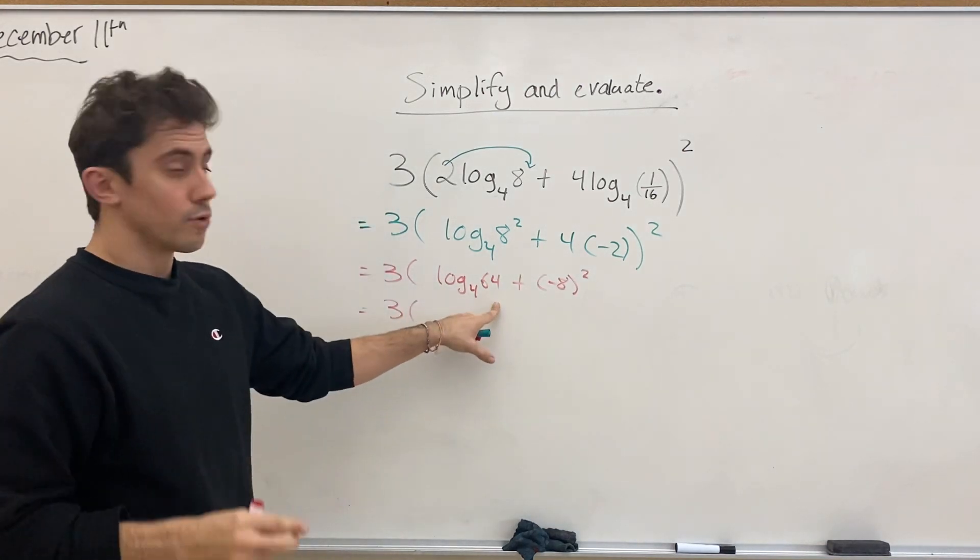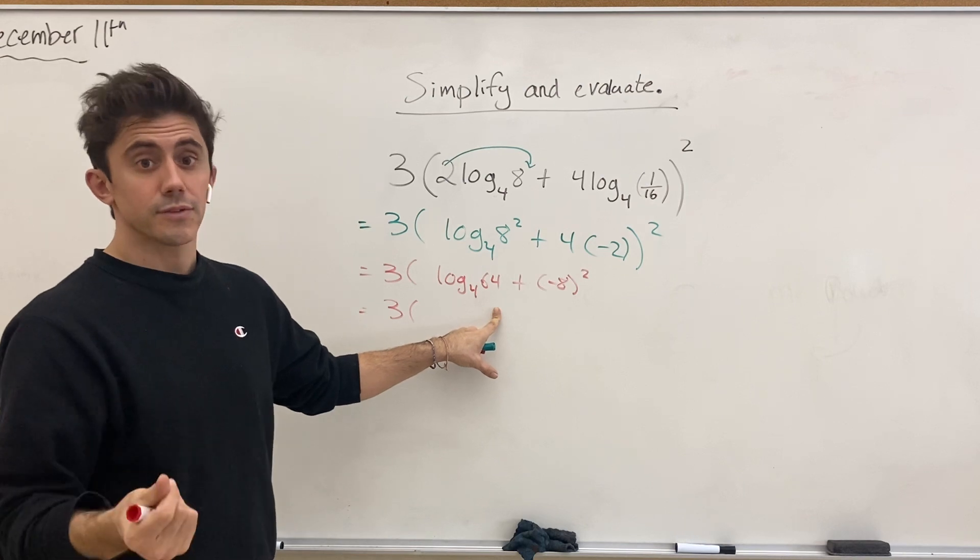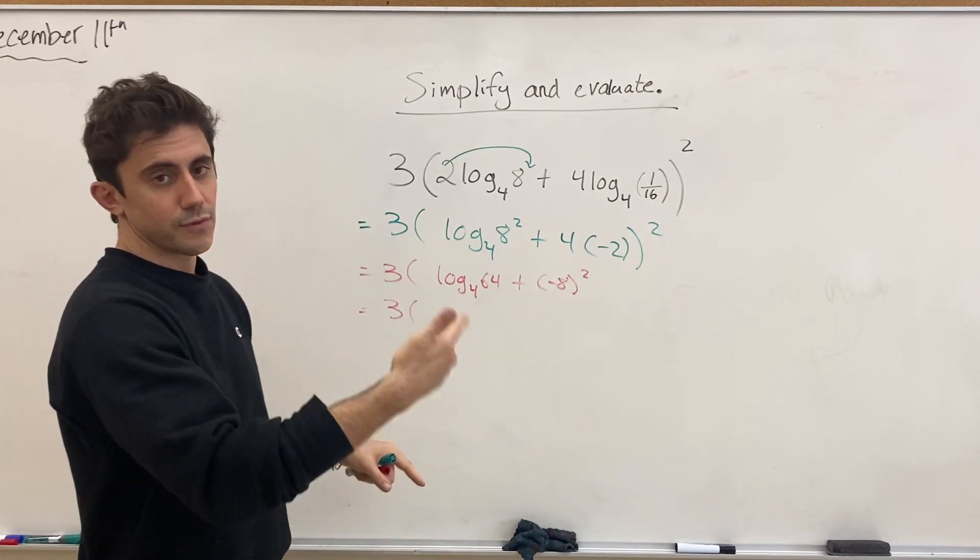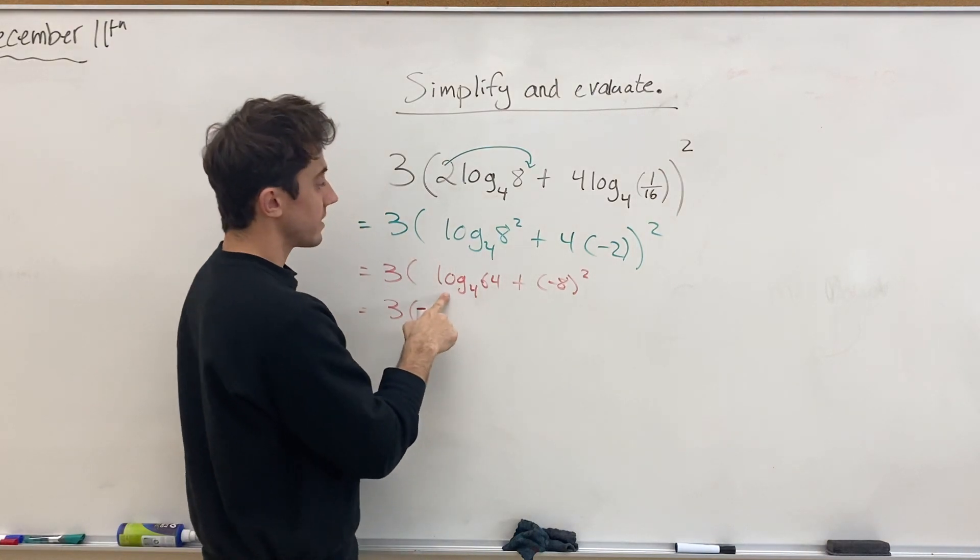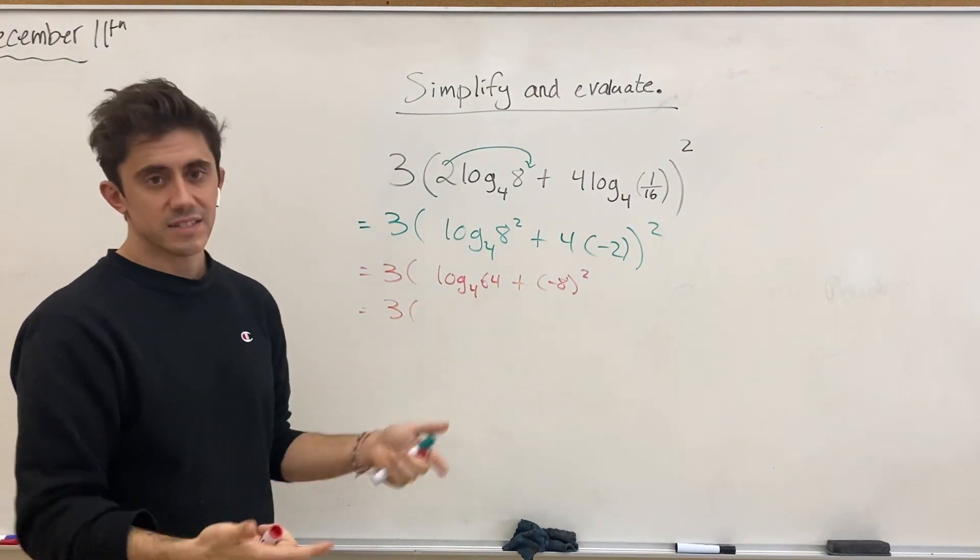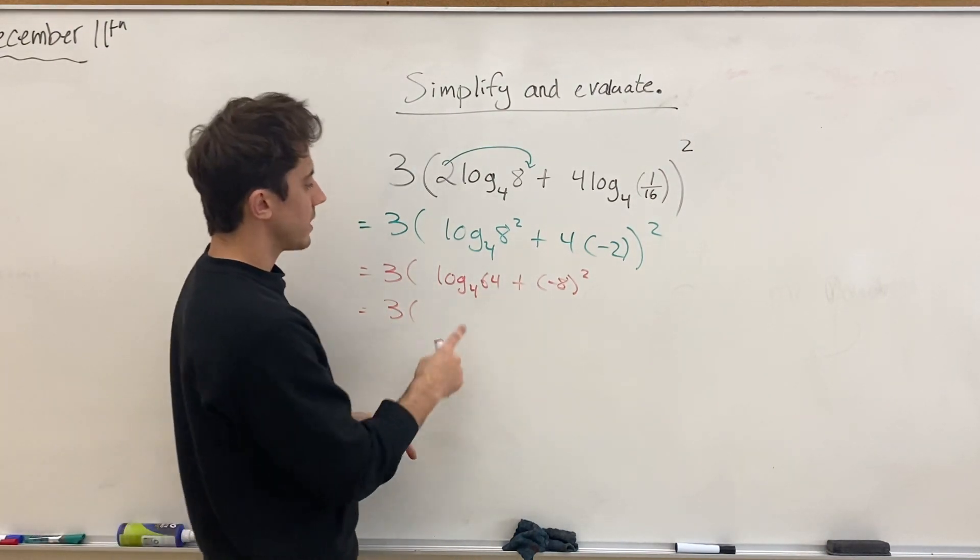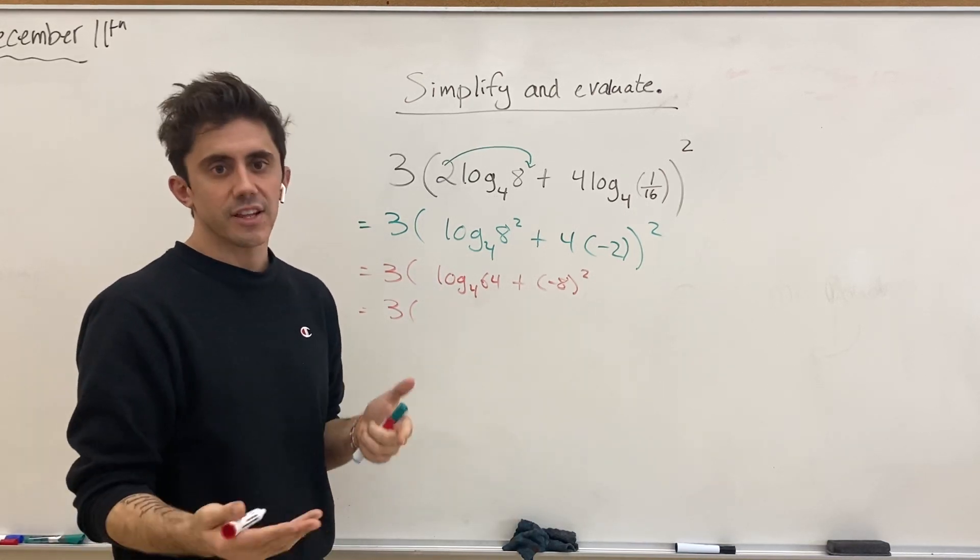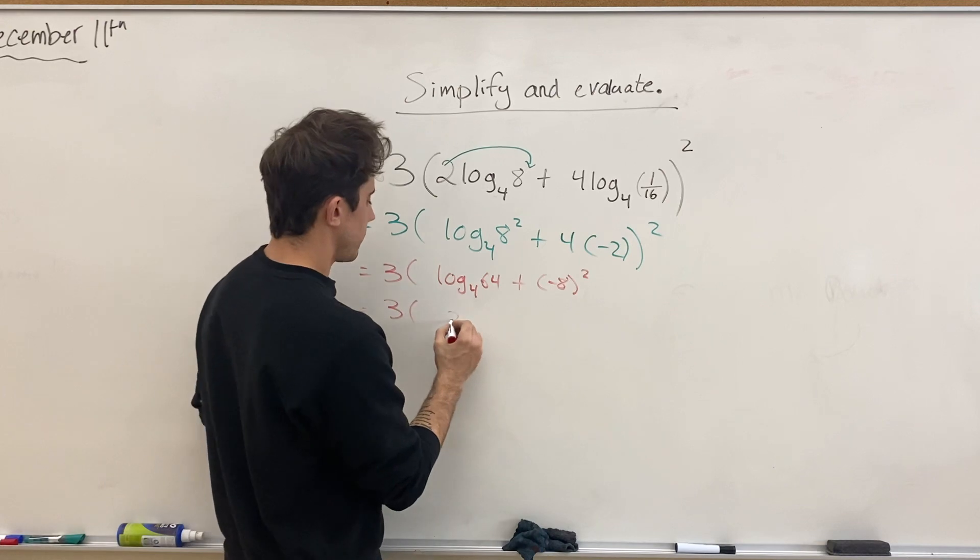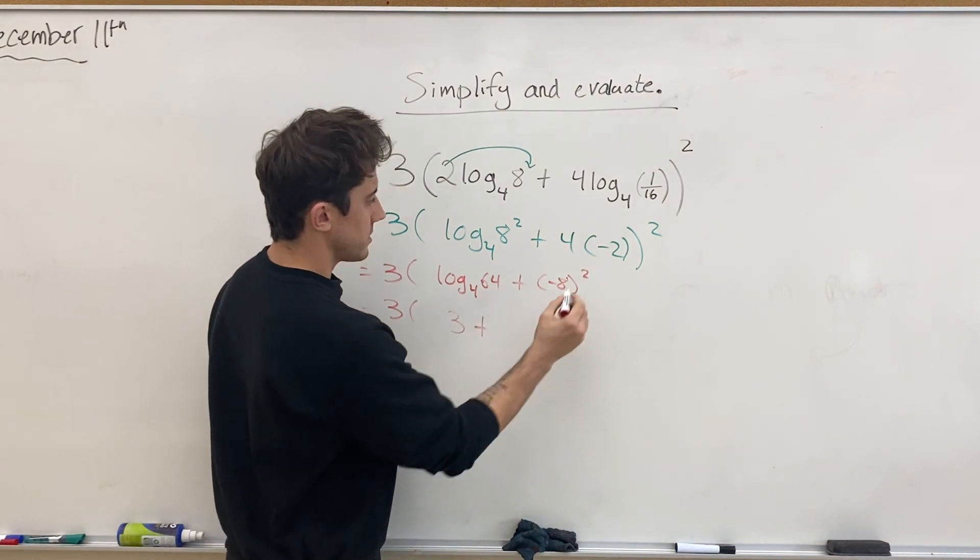And log base 4 of 64, we can get that number right away. That's simply 3 - 4 cubed. 4 times 4 is 16, times 4 again gives us 64. And so, again, log base 4 of 64 asks the question: what do we have to raise 4 to the power of for it to become 64? And the answer to that question is 3 plus, whoopsies,